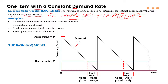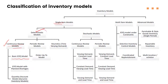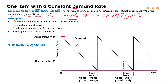Let's discuss the assumptions of the EOQ model. First, demand is constant over time, as we have seen earlier. This is represented in a graph where the x-axis is time and the y-axis is the inventory level or quantity of the product. So demand is constant over the time.